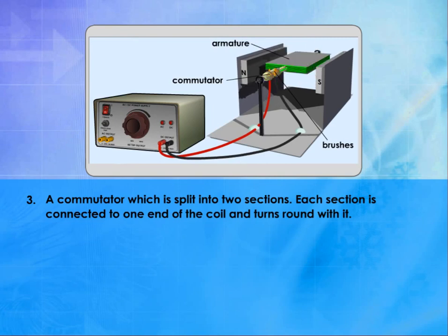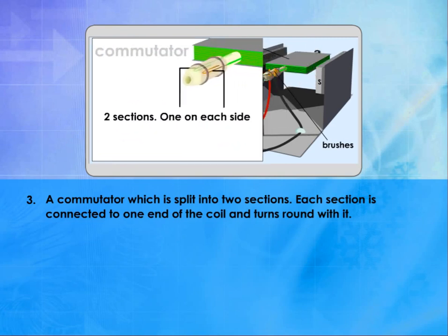3. A commutator which is split into two sections. Each section is connected to one end of the coil and turns round with it.